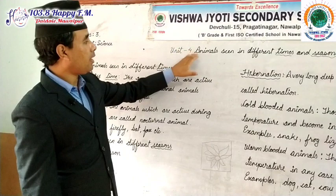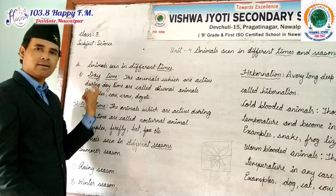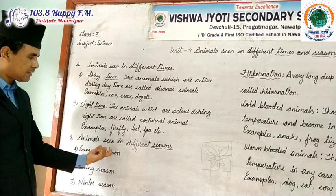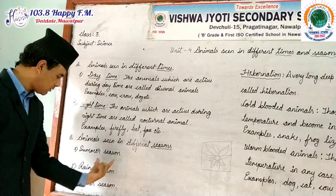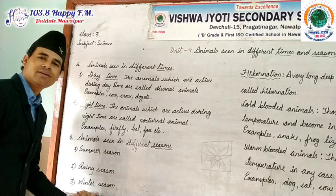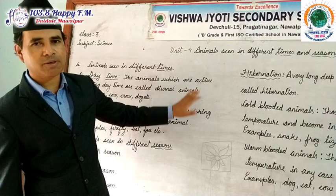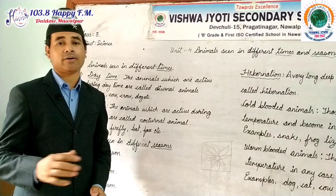To summarize: animals seen in different times means day and night — diurnal and nocturnal animals. Animals seen in different seasons — summer, rainy, and winter season. Some animals are active during summer and rainy seasons and disappear during winter. I hope this is clear. See you in the next episode of our digital classes. Until then, be safe, stay at home, and please do your regular home assignments. Namaskar.